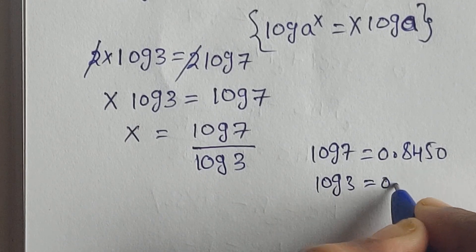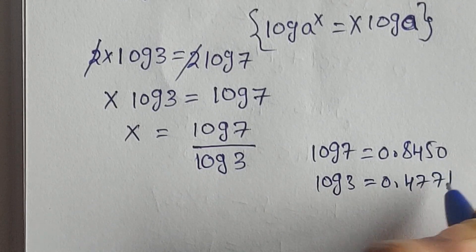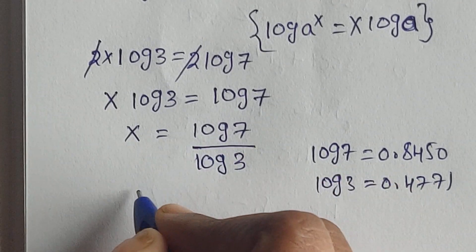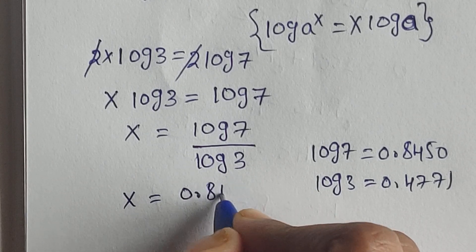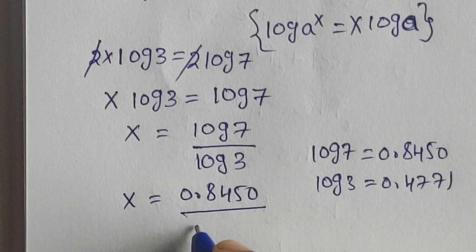Let's substitute the values in this equation. x equals log 7, which is 0.8450, divided by log 3 value, which is 0.4771.